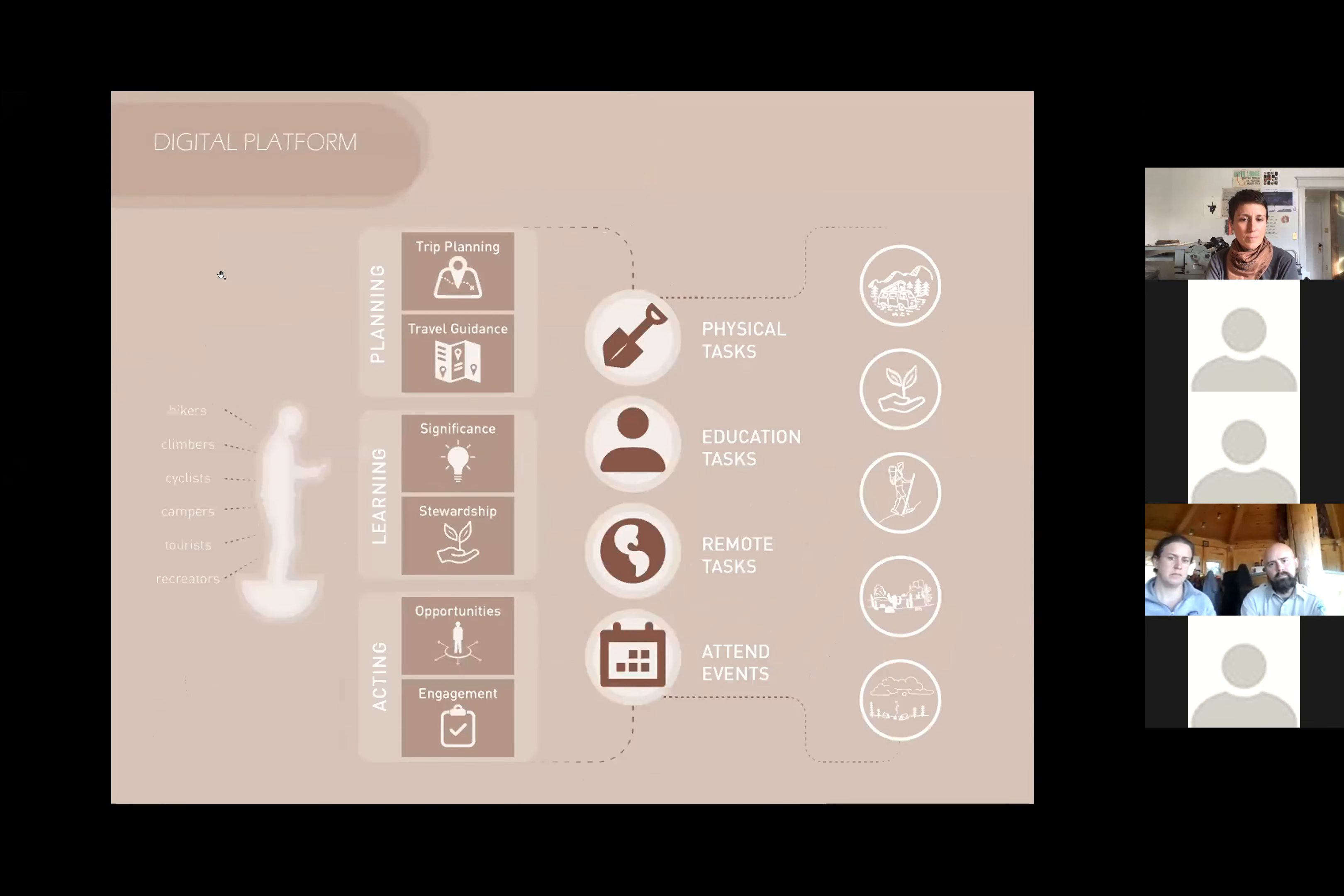This led me to the idea of a mobile app that would help users plan trips for outdoor recreation, learn about the significance of the land and how to visit respectfully, as well as identify opportunities to benefit the land in some way on the trip. Users of the app will complete tasks across four different categories: physical tasks, educational tasks, remote tasks, and organized events or service projects. After engaging in various ways, the user will earn badges that can add up to rewards for their stewardship.